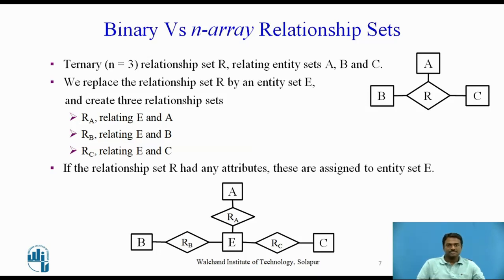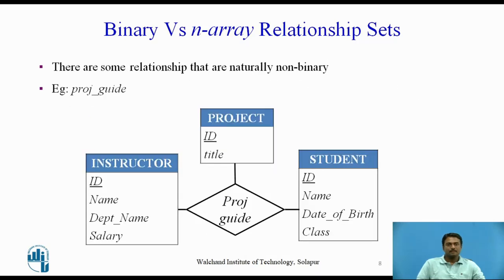If the relationship set R had any attributes, these are assigned to entity set E. Consider the relationship set project_guide relating instructor, student, and project. We cannot directly split project_guide into binary relationships between instructor and project and between instructor and student. The relationship set project_guide can be split into binary relationships by treating it as a new entity set; however, doing so would not be very natural.